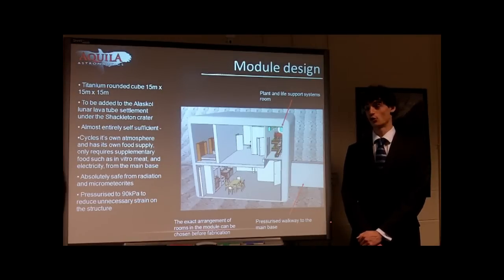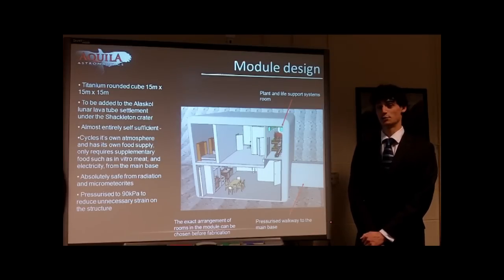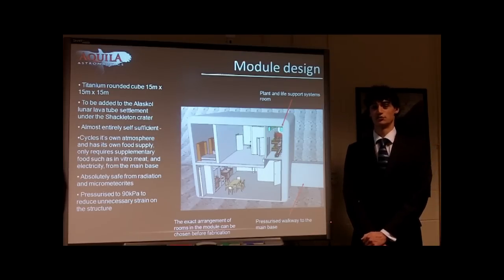Aquila Astronautics proposes building on site a titanium cube of side 15 meters, which will have rounded corners and edges to help it withstand the necessary pressure differential of 90 kilopascals.